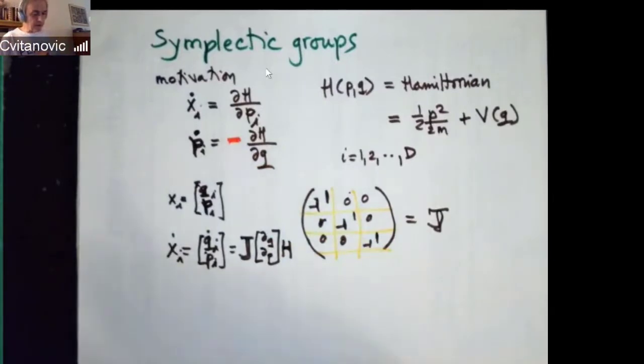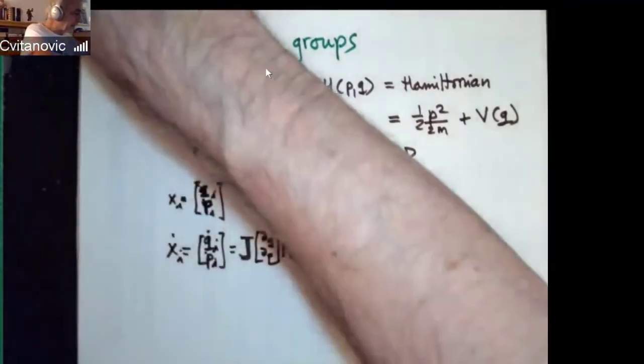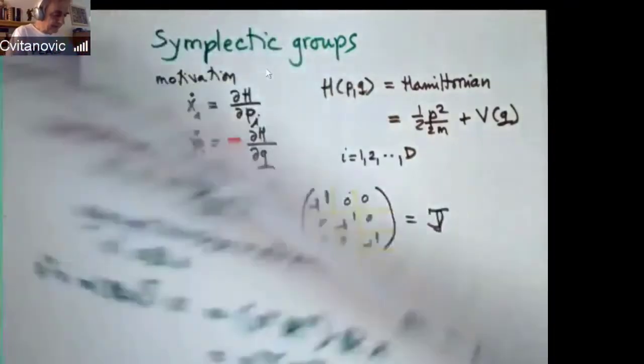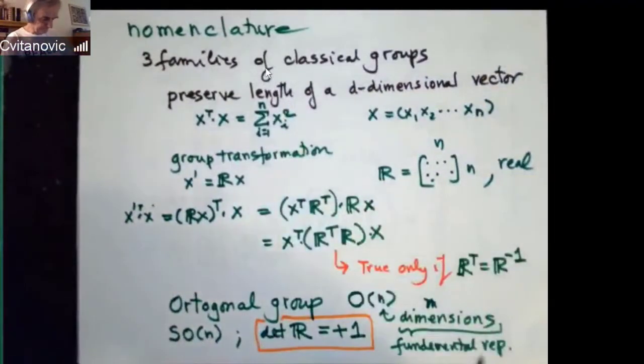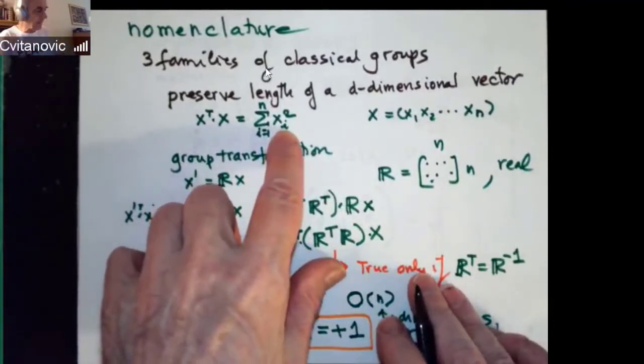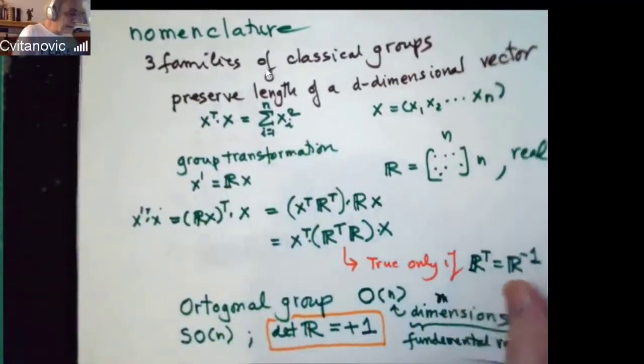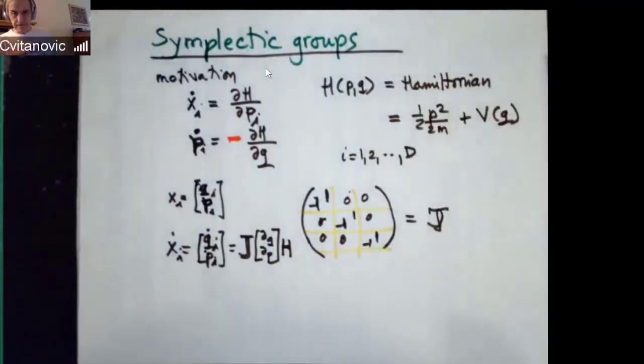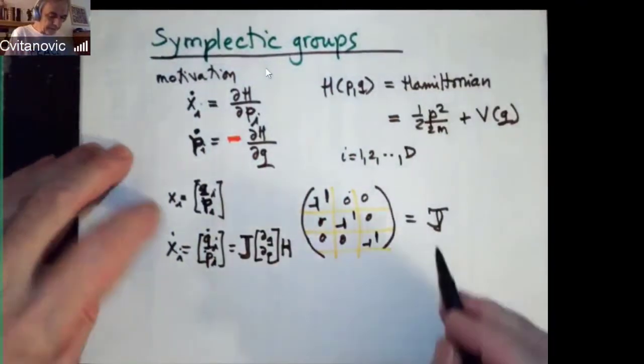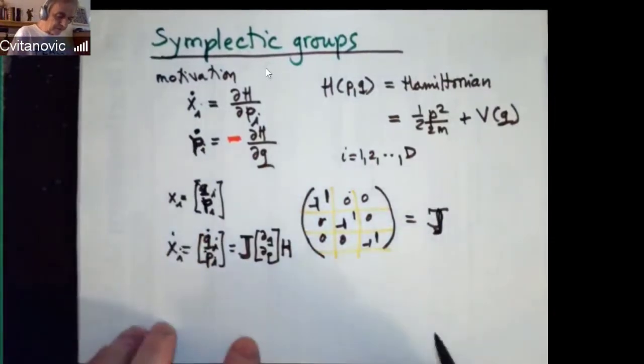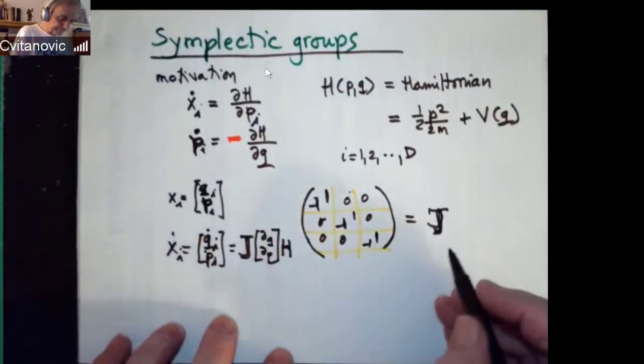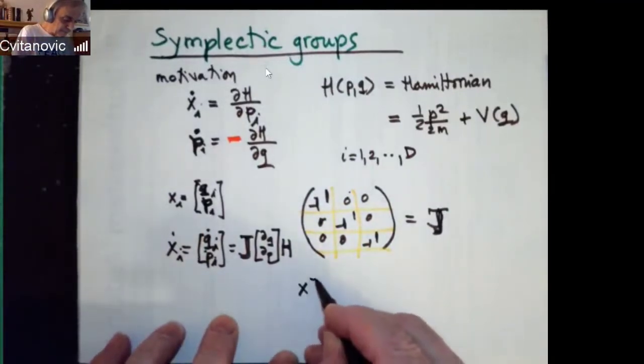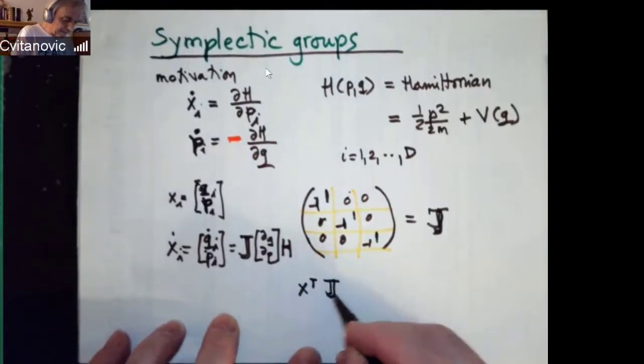So the structure that's being preserved by Hamiltonian evolution is not length of some vector. Before we had this idea that when we rotated something, we have to preserve its Euclidean length. But when you have a mechanical system, you move to the phase space, which is half of its coordinates, half of its momenta. And what's being preserved is this combination, which is when I multiply X transpose times this matrix X.